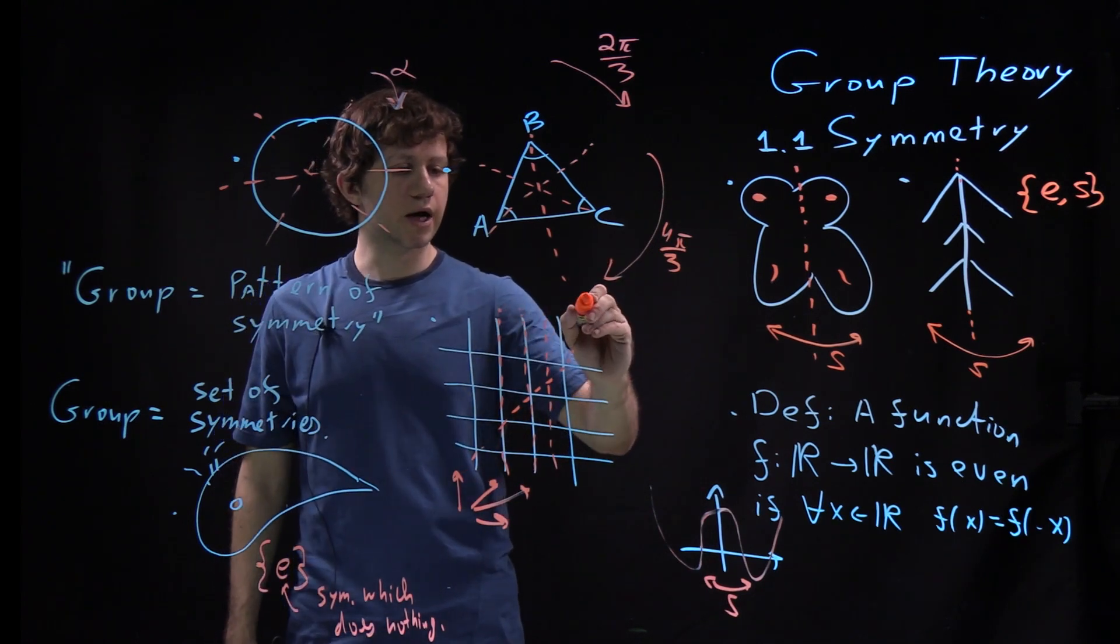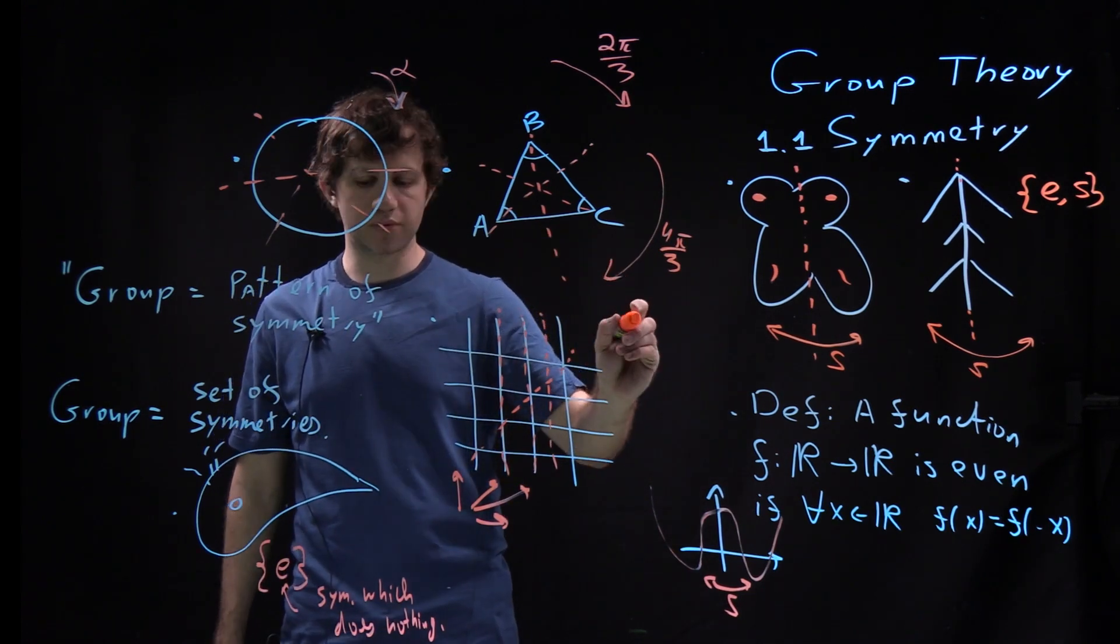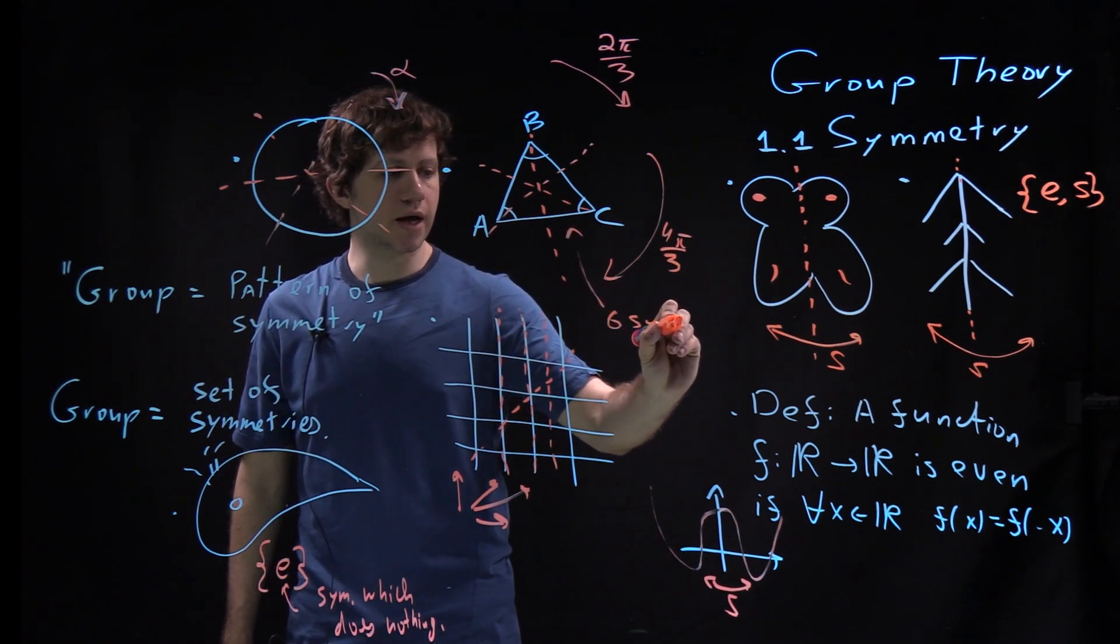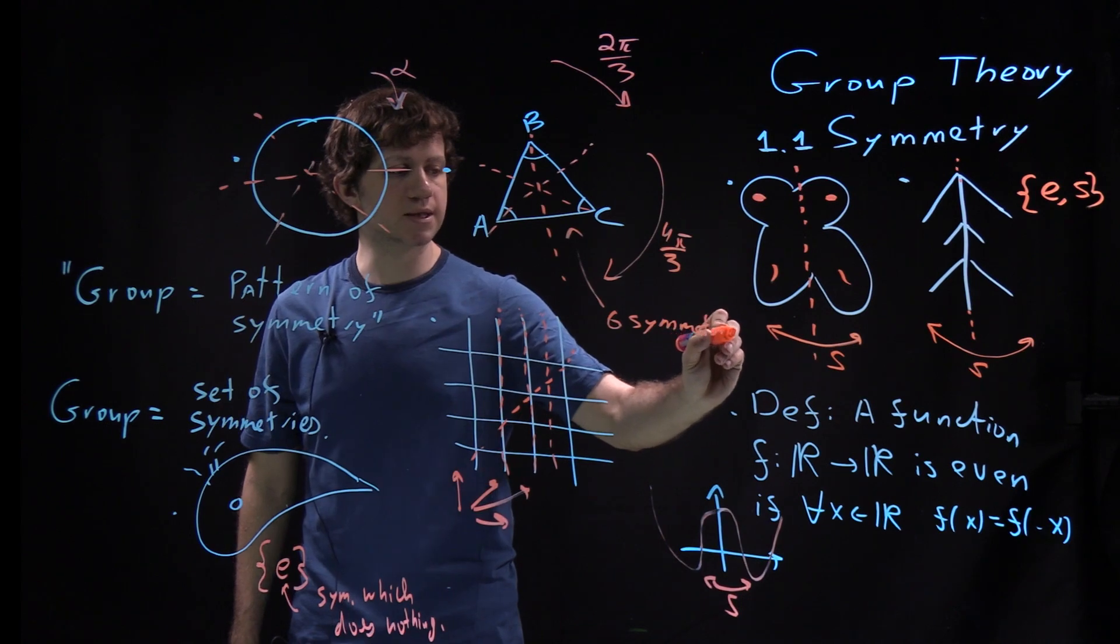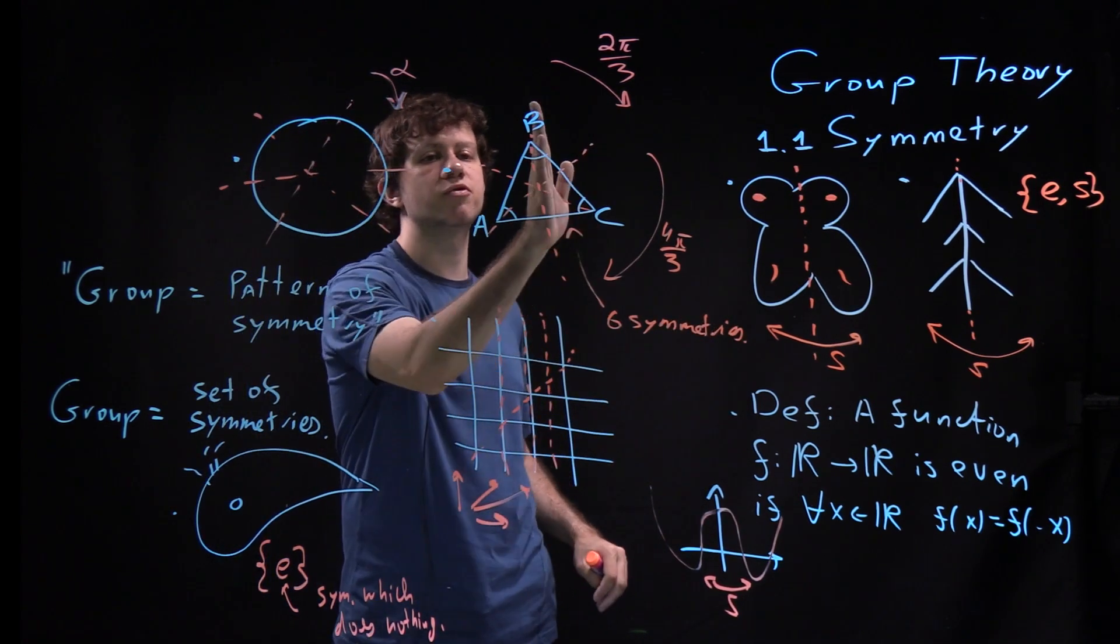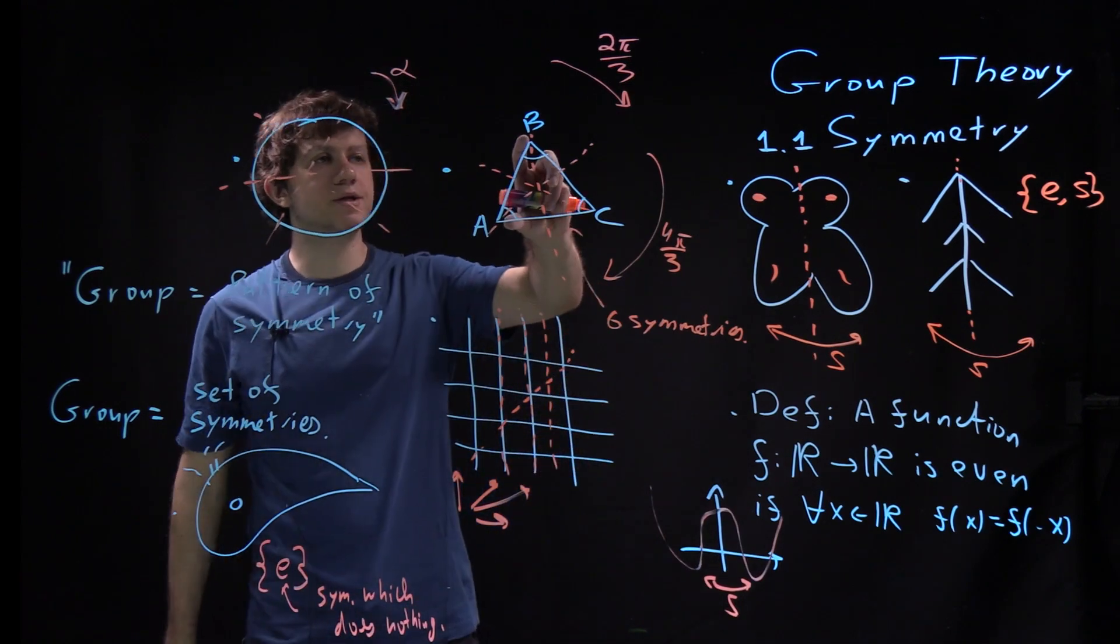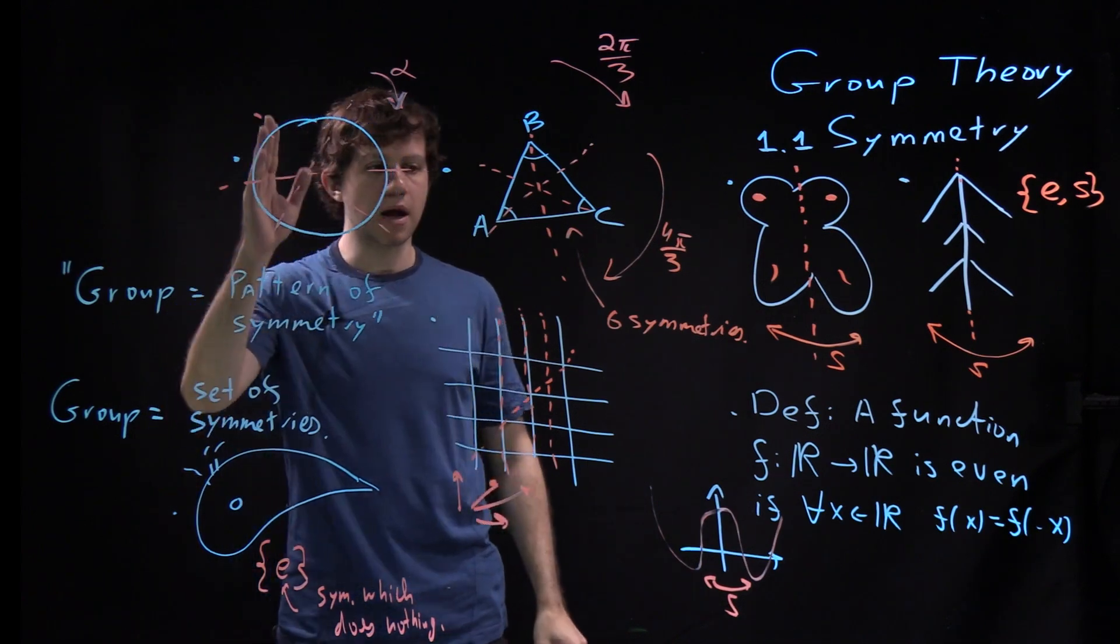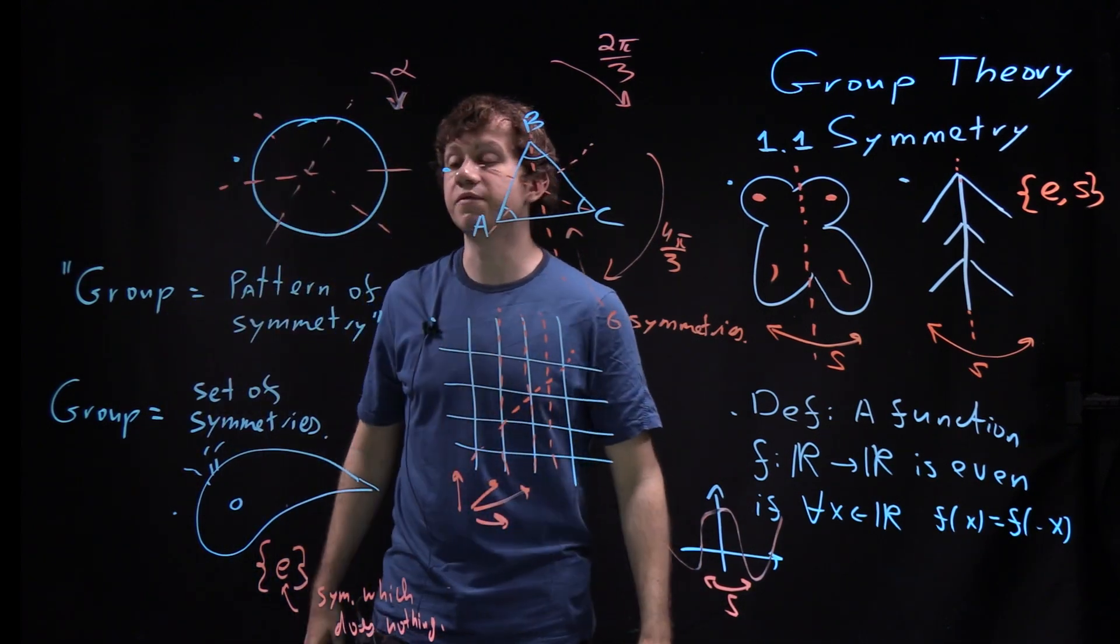So here, in this triangle example, there are actually six symmetries. And we will discuss this example a little bit later in detail. There are three symmetries with respect to lines and there are two rotations. So five plus the one which does nothing. And here and there we have infinitely many.